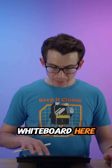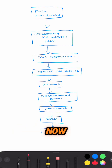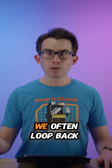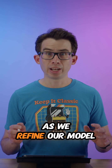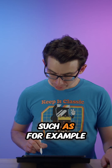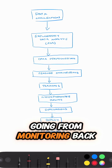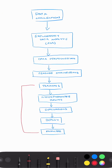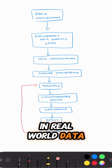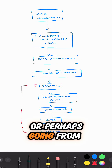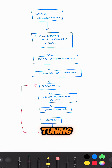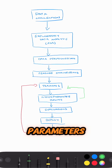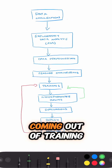And if we look at the whiteboard here, we can see that right now this pipeline is reasonably linear, but that's not always the case. We often loop back to earlier stages as we refine our model — for example, going from monitoring back to training if we need to update our model due to changes in real world data, or going from hyperparameter tuning back to training if we want to try different combinations of hyperparameters to find what results in the best model.